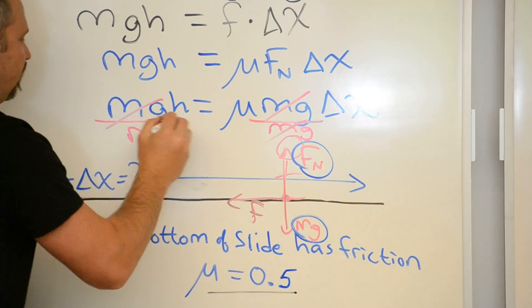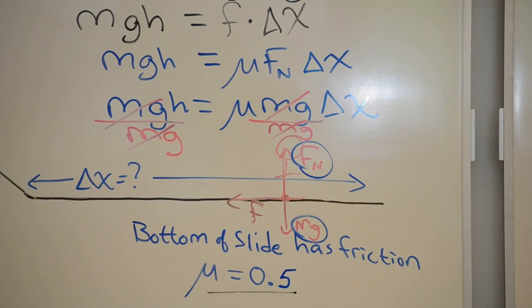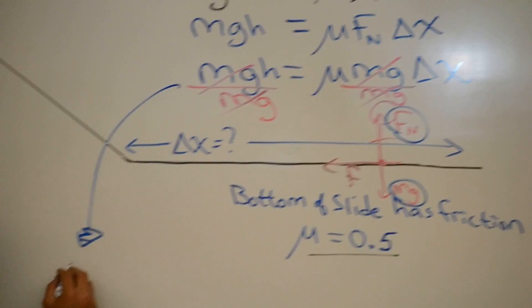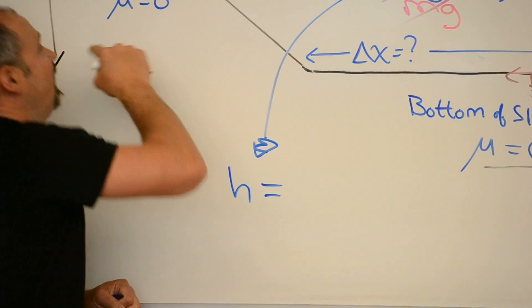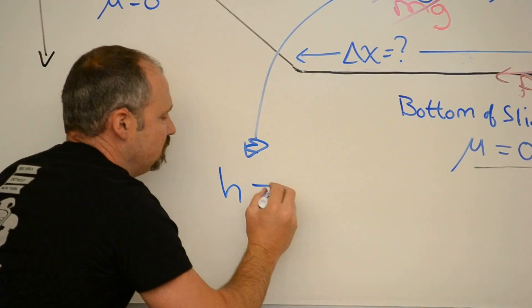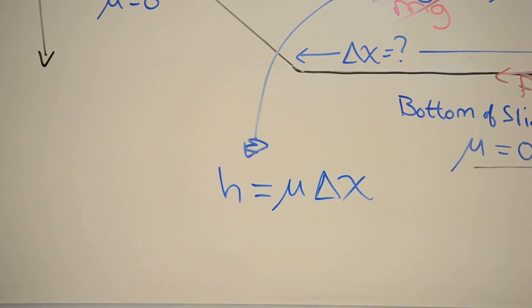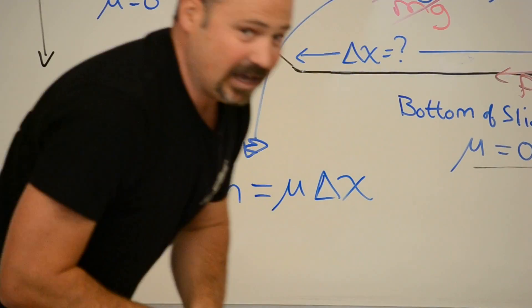Cancel, cancel, cancel, cancel, cancel. And finally, coming down here, I have h, that is the height of the slide, equals mu times the distance traveled. I can plug in the values and we'll get our answer.